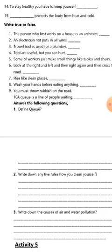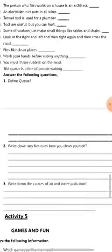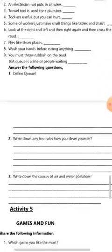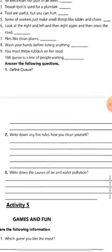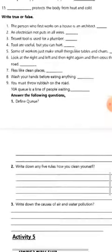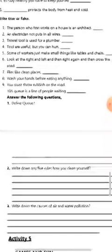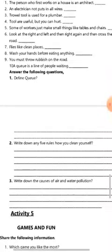An electrician puts in all the wires. Tools used for plumbing are for plumbers. Tools are useful but you can get hurt. Some workers make small things like tables and chairs. Look left, right, and then left again before crossing the road. Decide whether each statement is true or false — write T for true and F for false, or use a tick or cross, whichever is convenient for you.